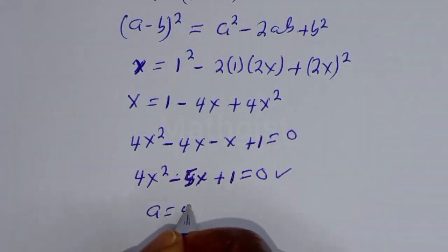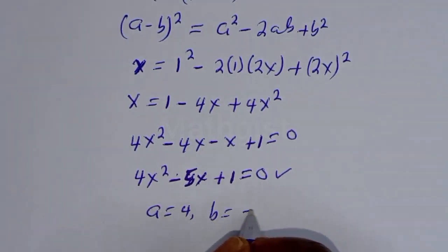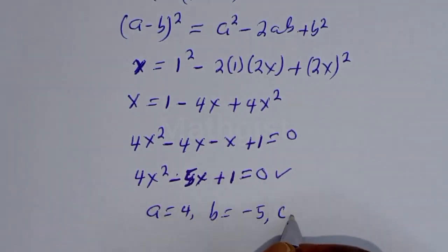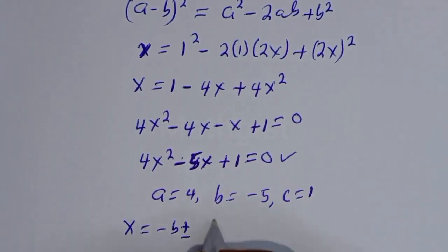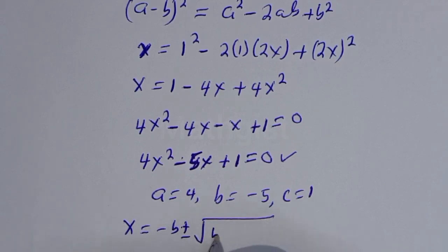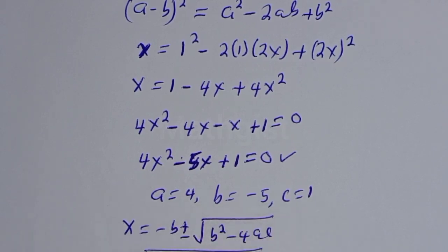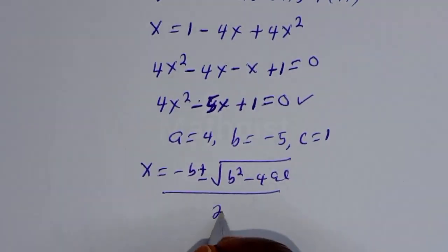From this quadratic equation, a is equal to 4, b is equal to minus 5, c is equal to 1. Then s is equal to minus b plus or minus square root of b squared minus 4ac, over 2a.